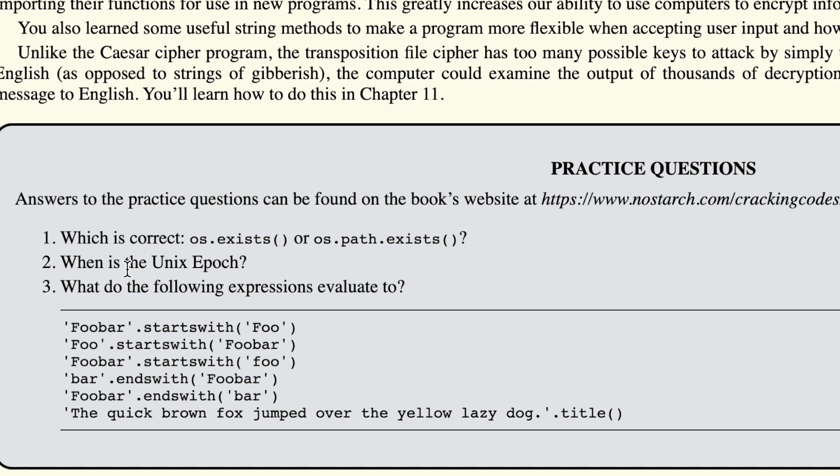The next question is when is the Unix epoch. When we use the time function, the start point corresponds to January 1st, 1970 at midnight — that is basically the zero point for the Unix epoch, and any date after that has a positive value that we can use as a reference.